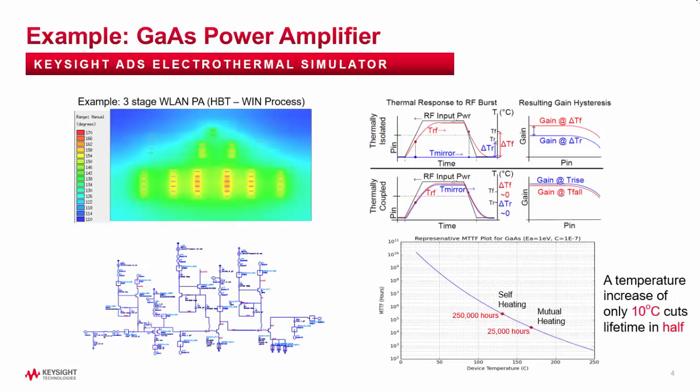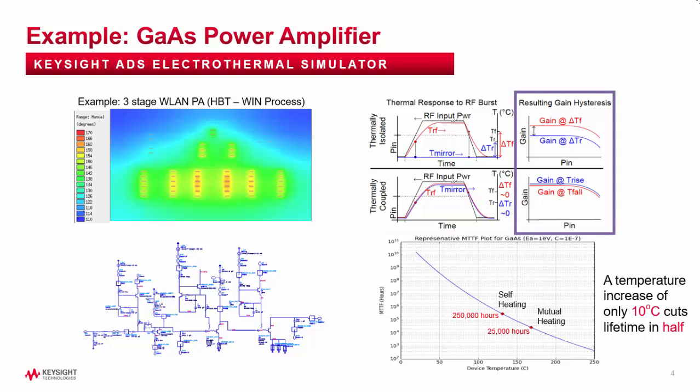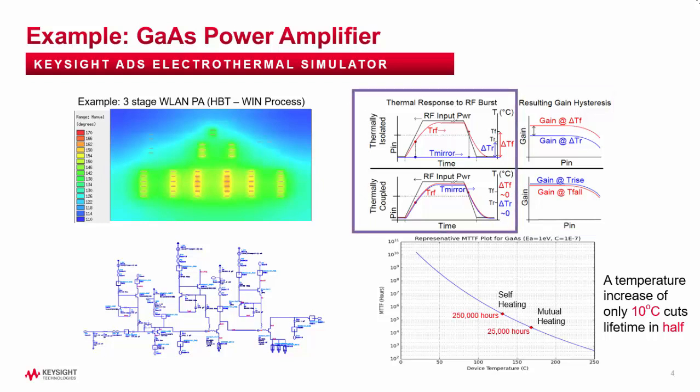Here's a design that is very representative of the RF microwave circuits you can solve using ADS Electrothermal. It's a three-stage GaAs power amplifier designed using a GaN-HBT process and targeted at WLAN applications. Here I'm showing plots of RF input power and transistor temperature versus time, and also plots of gain versus Pin. As you can see on these plots on the left, it was simulated using a pulsed RF input signal.